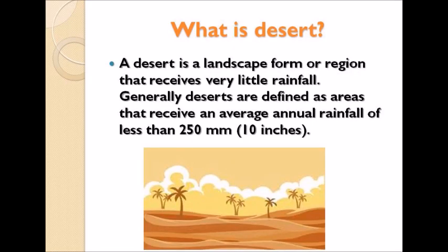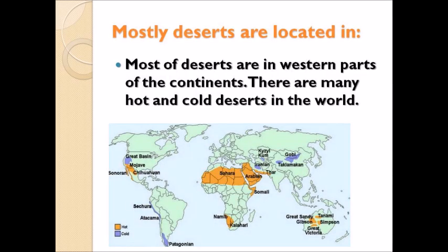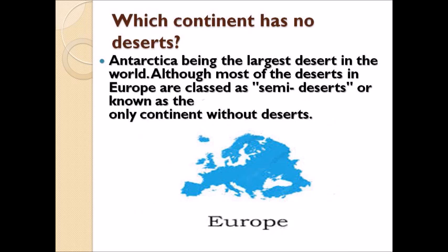Our first topic is: what is a desert? A desert is a landscape form or region that receives very little rainfall. Generally, deserts are defined as areas that receive an average annual rainfall of less than 250 mm or 10 inches. Do you know most deserts are in the western parts of continents? There are many hot and cold deserts in the world.